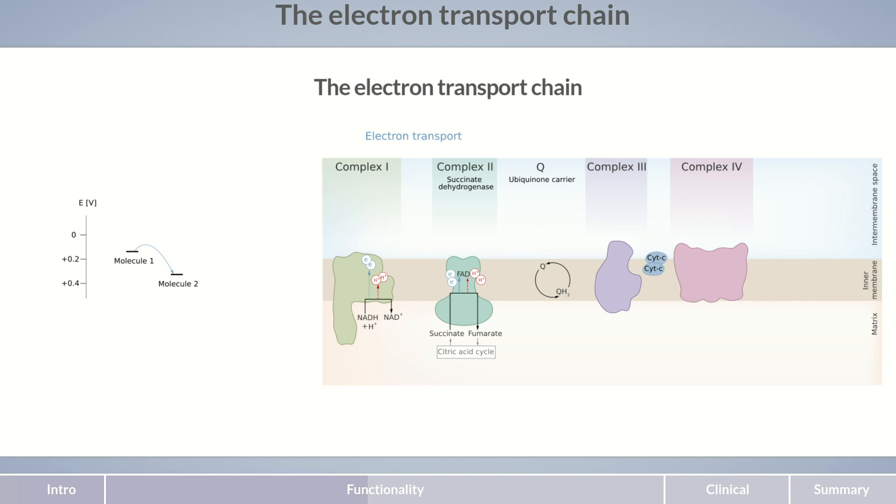In the electron transport chain, the electrons gradually pass along the various proteins. They're shuttled from complex 1 or 2 to coenzyme Q and from there to complex 3 and further to cytochrome C. Cytochrome C carries the electrons to the last protein of the electron transport chain, complex 4.